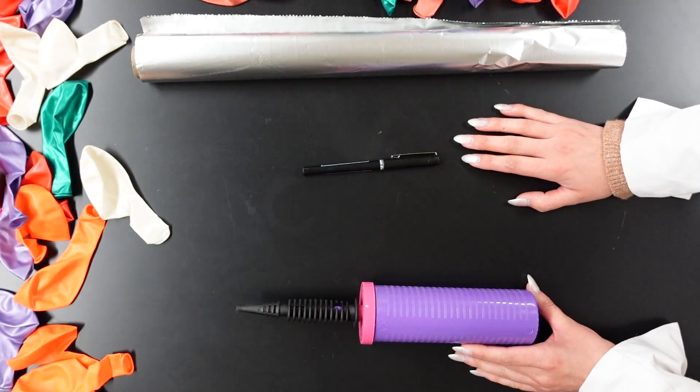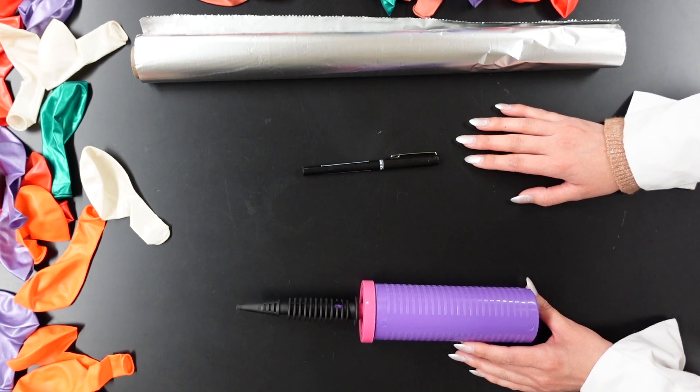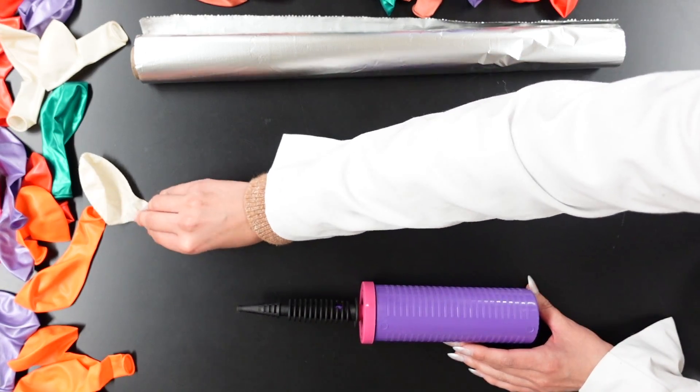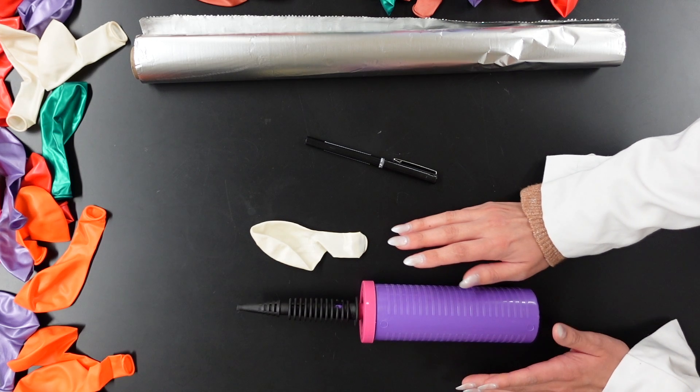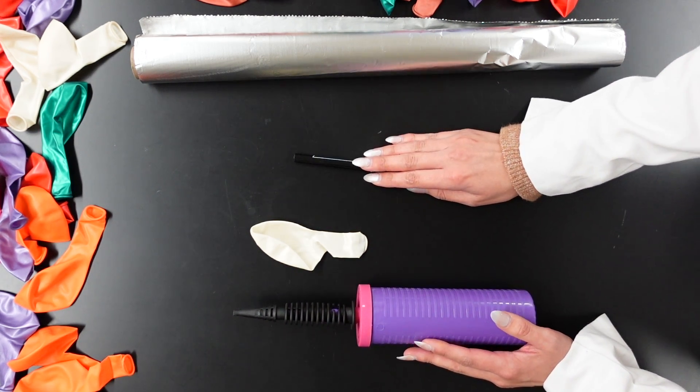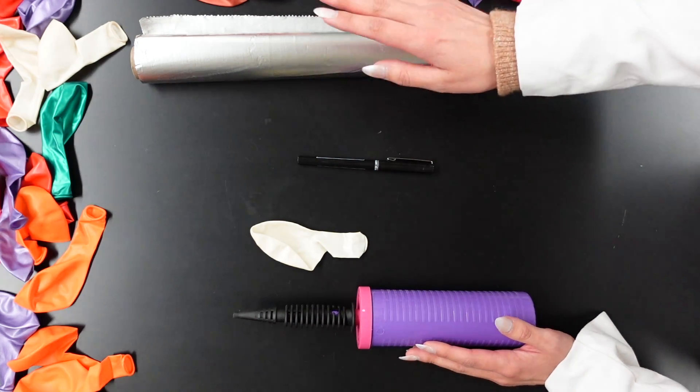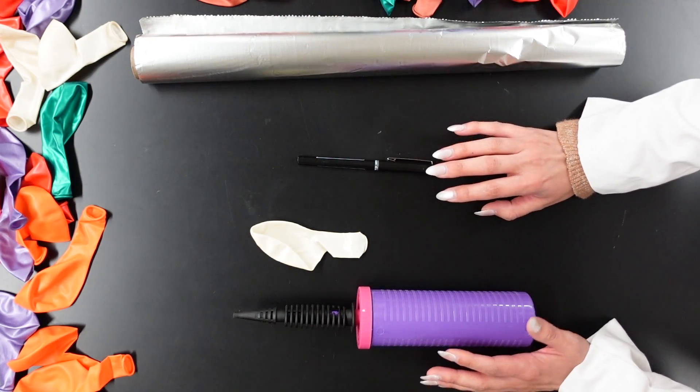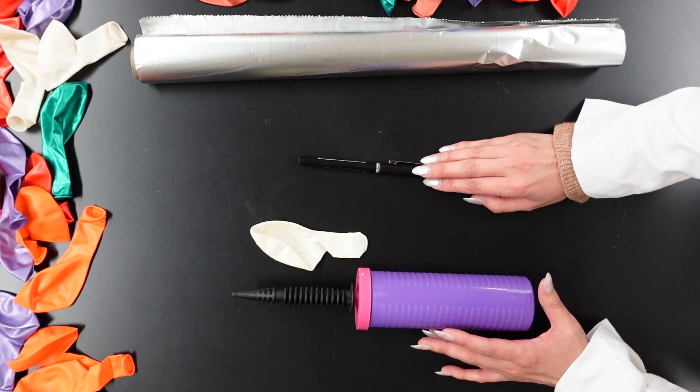So here we have our materials. Today we're going to be using some balloons, a balloon pump to pump up the balloons, a pen to pop our balloons, and some tin foil. So if you want to get those materials ready you can pause the video and grab them.